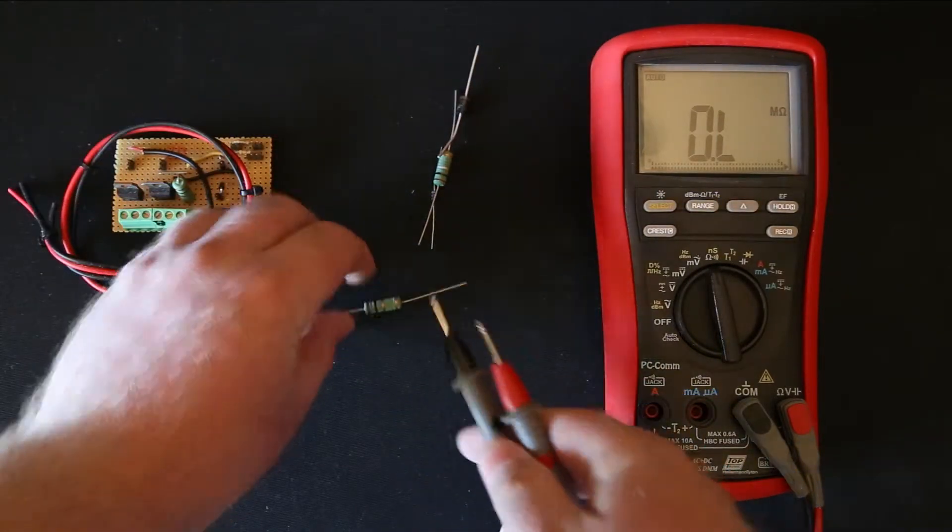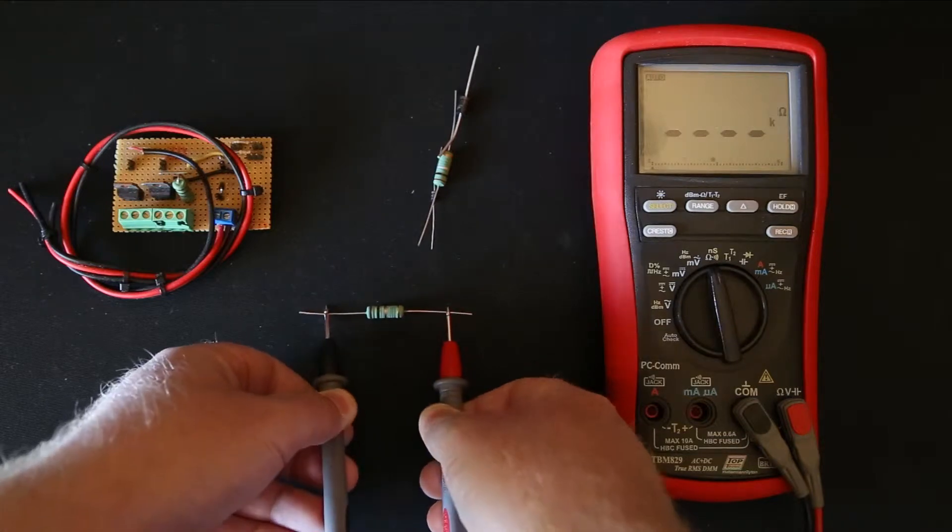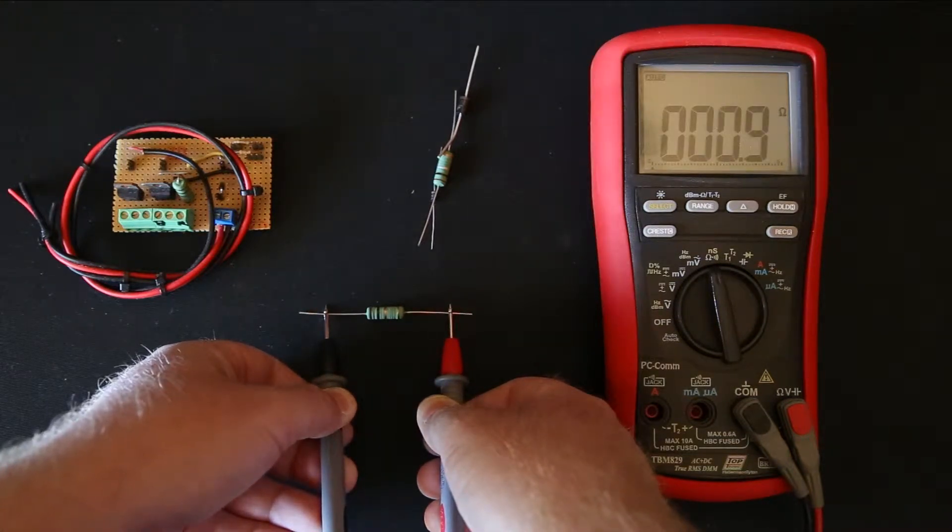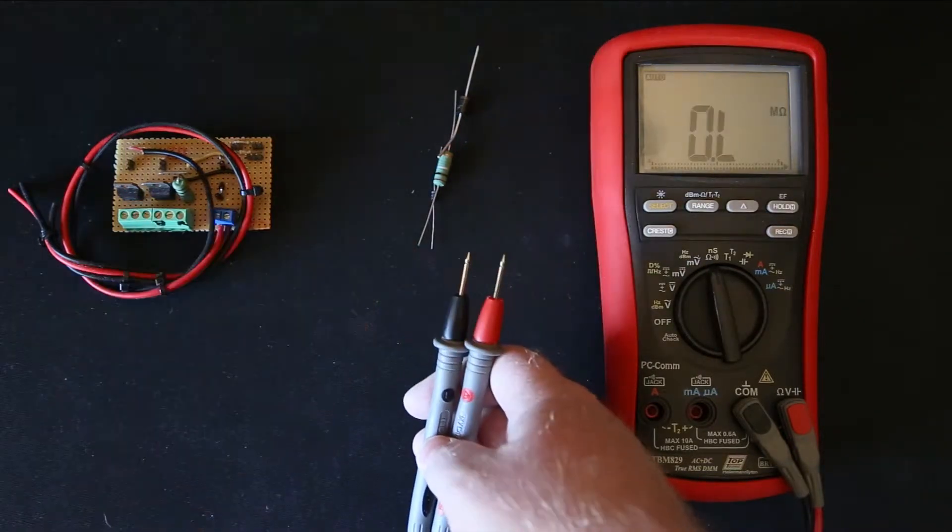We'd hook our resistor up. Preferably don't touch them because your body resistance does play a part in the actual measurement. This is a 1 ohm and as you can see we're registering 0.9 ohms as a 5% 1 ohm resistor. That resistor is good. I'm happy with that.